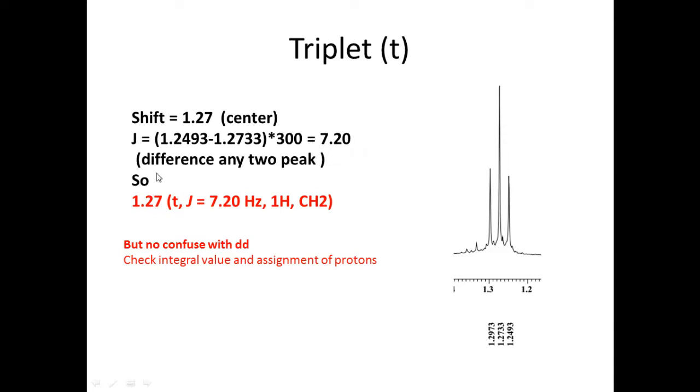So difference of any 2 peaks represent the J values. So the chemical shift is the center peak. So the 1.7 triplet J is equal to 7. Here you can add your compound information. What type of proton. How many type of protons, 2 or 3. Which type of proton, OCH2.